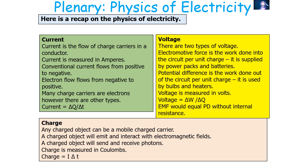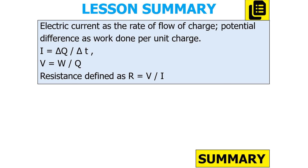The EMF would equal your PD without the phenomenon of internal resistance. For charge: any charged object can be a mobile charge carrier. A charged object will emit and interact with electromagnetic fields, sending and receiving photons. Charge is measured in coulombs, where charge equals current I times the change in time T. In summary: electrical current is the rate of flow of charge, potential difference is the work done per unit charge, I equals delta Q over delta T, V equals W over Q, and resistance equals V over I.